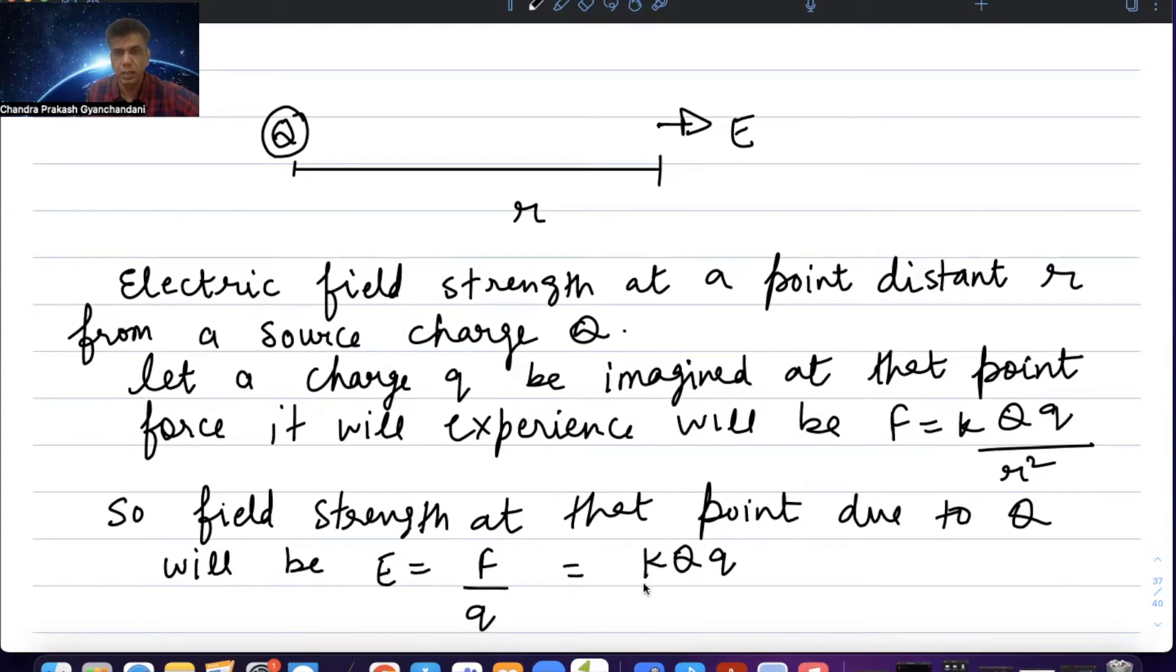That is k Q2 upon r square into Q2. That is k Q upon r square. This is the field strength at that point.